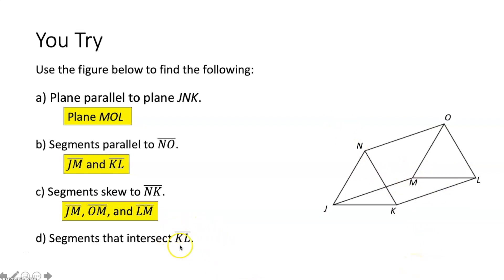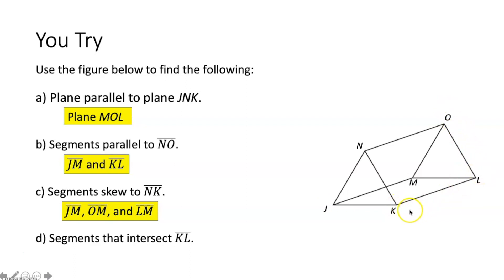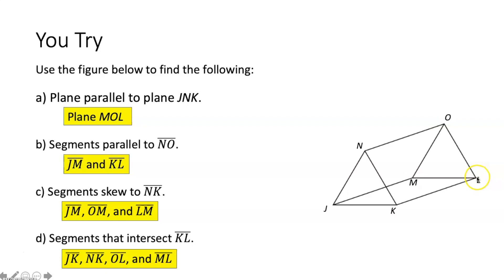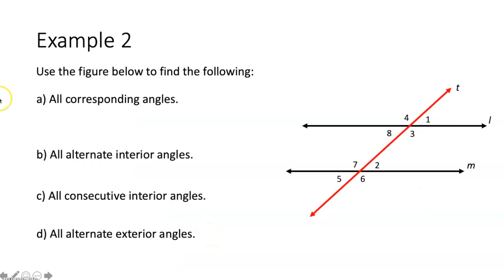Segments that intersect segment KL: segment NK intersects KL at point K, segment JK intersects KL at point K, segment OL intersects KL at point L, and segment ML intersects KL at point L — those are all segments that intersect segment KL.